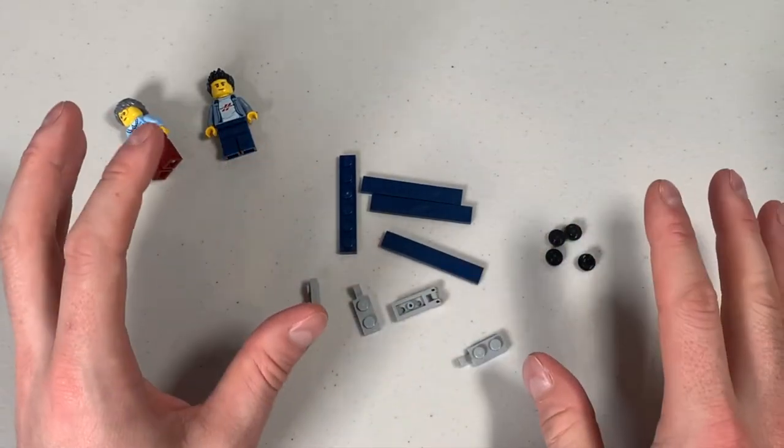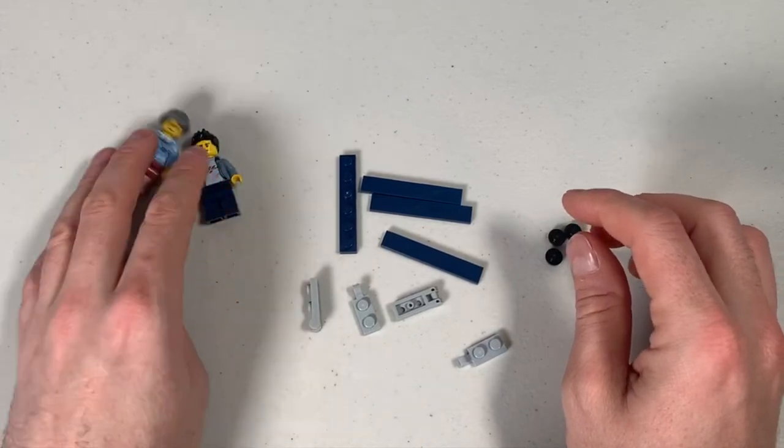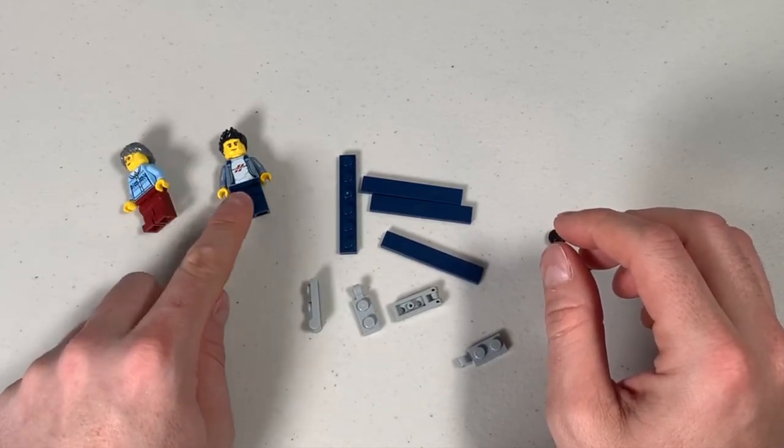Now these are the park benches or the style of park bench that I use in my Lego City. So we've got two little minifigs here ready and waiting for a seat.